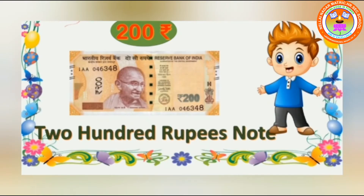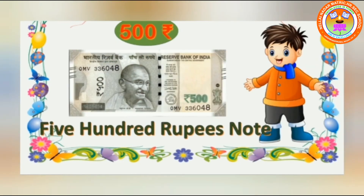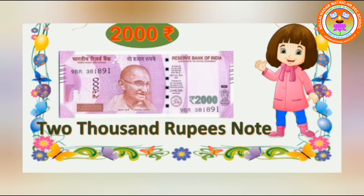This is 200 rupees note. What is this, children? This is 200 rupees note. This is 500 rupees note. What is this, children? This is 500 rupees note. This is 2000 rupees note. What is this, children? This is 2000 rupees note.